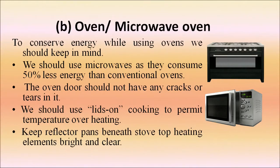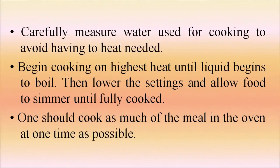Next is the oven or microwave oven. To conserve energy while using ovens: use microwaves as they consume 50% less energy than conventional ovens. The oven door should not have any cracks or tears. Use lids on cooking to permit temperature retention. Keep reflector pans beneath the stove top heating element bright and clear. Carefully measure water used for cooking. Begin cooking on highest heat until liquid begins to boil, then lower the setting and allow food to simmer until fully cooked.